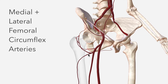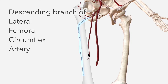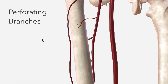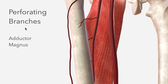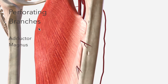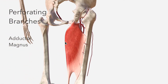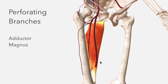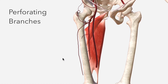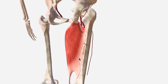The descending branch of the lateral circumflex femoral artery eventually contributes to the blood supply of the knee joint, which will be covered in the next video on the popliteal artery. The profunda femoris also gives off three perforating branches, which perforate the adductor magnus and each contribute to the supply of the muscles in this area. The first perforating branch is located superior to the adductor brevis, while the remaining two are inferior to it — a useful anatomical landmark.